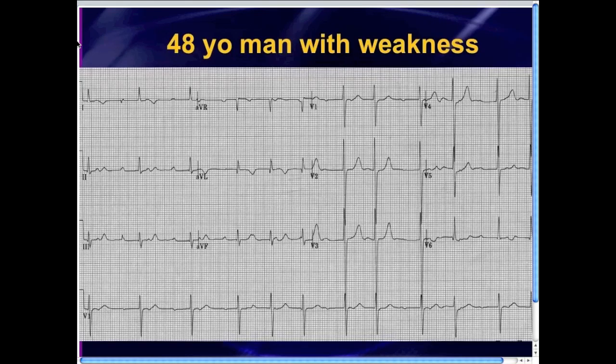It's a 48-year-old man that presented to the emergency department complaining of weakness. After the history and physical exam, you're going to start out with the 12-lead EKG. Looking at this 12-lead EKG, the ventricular rate is not too fast and not too slow, so we're relatively happy about the ventricular rate, but there's something going on that's a little bit hard to define.